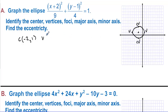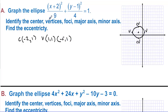The vertices are (1, 1) and (−5, 1). We have the center and the vertices plotted. Now for the focal points.